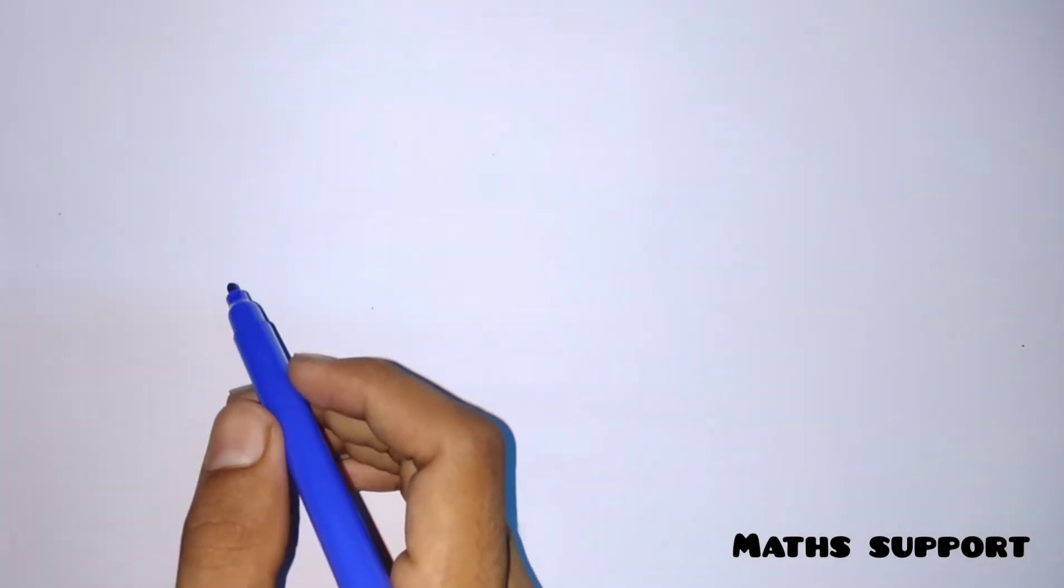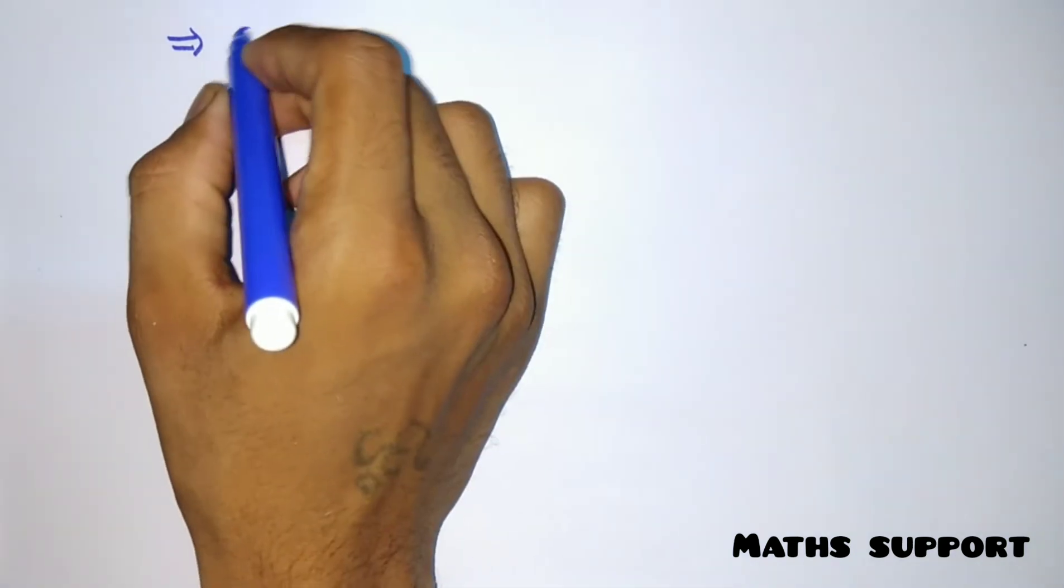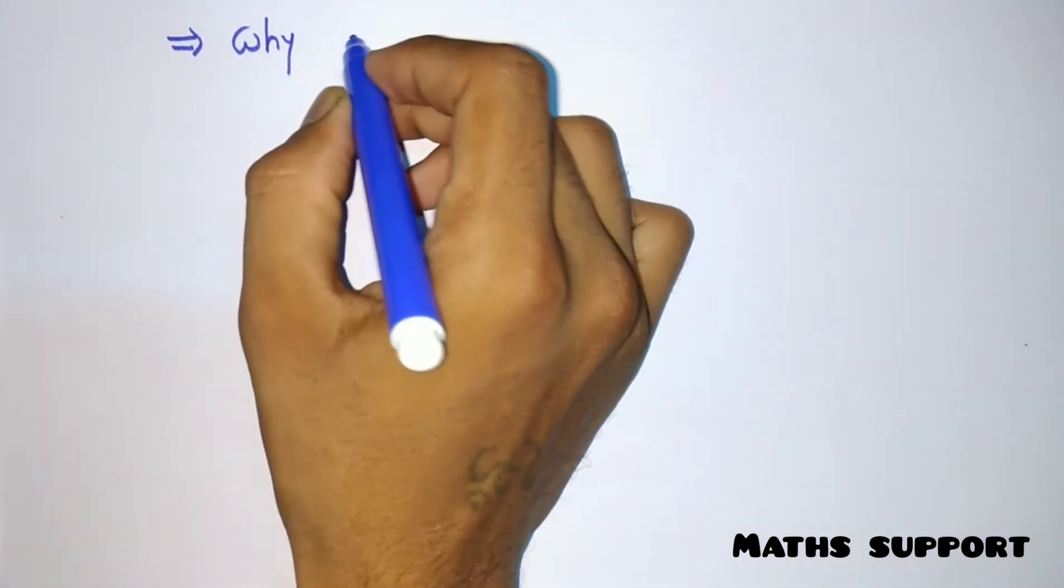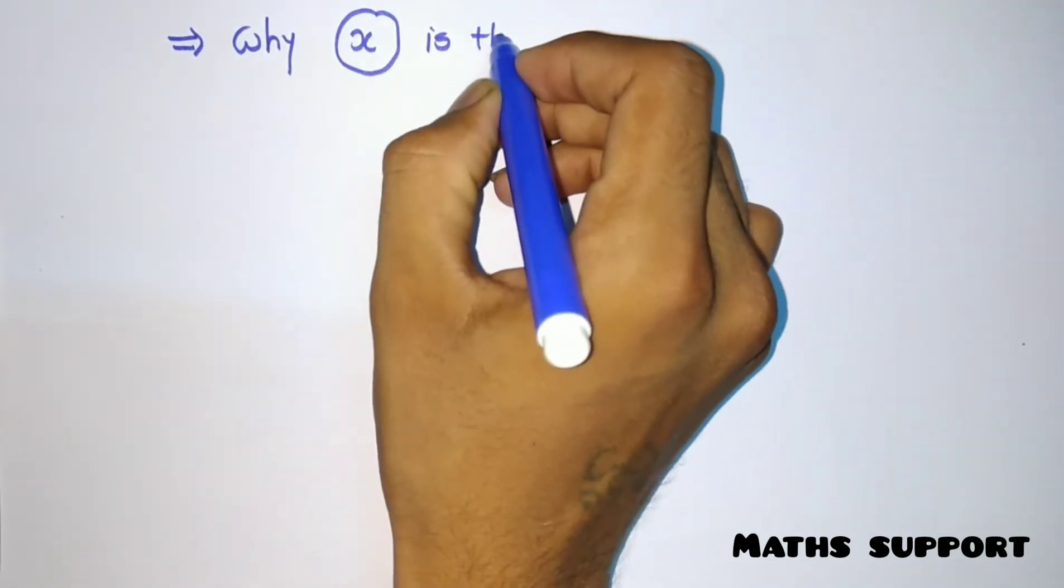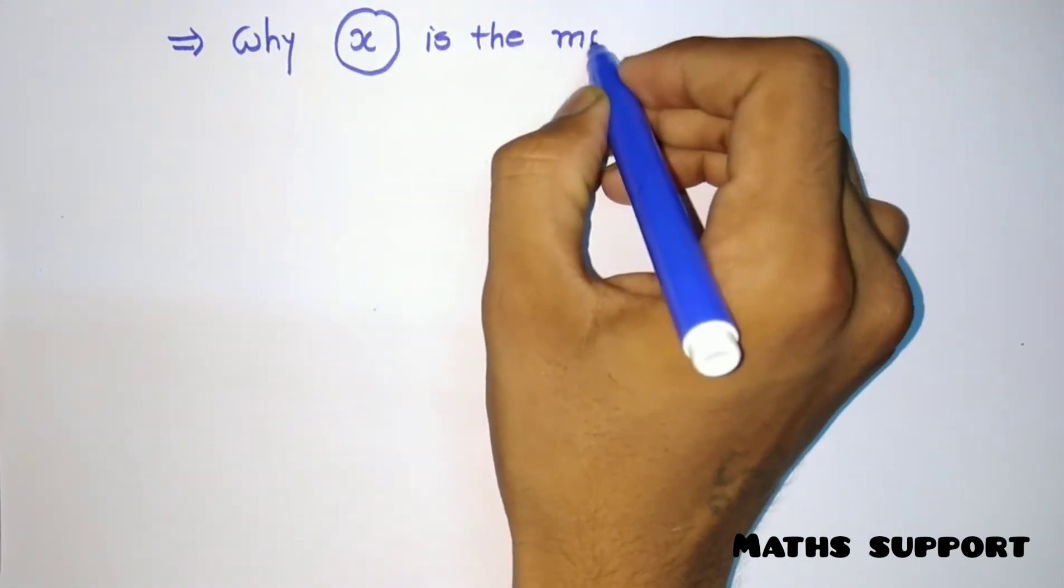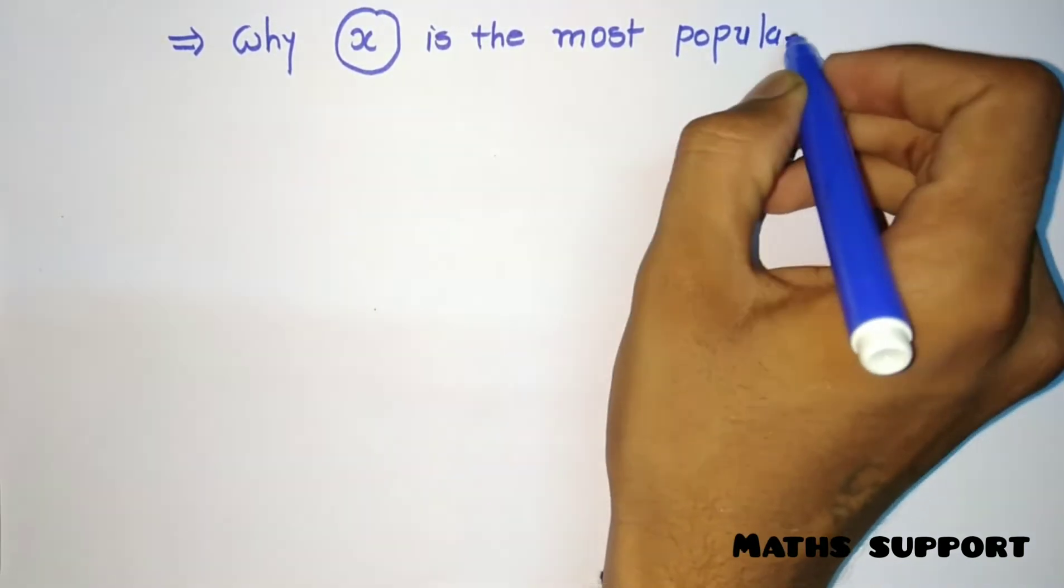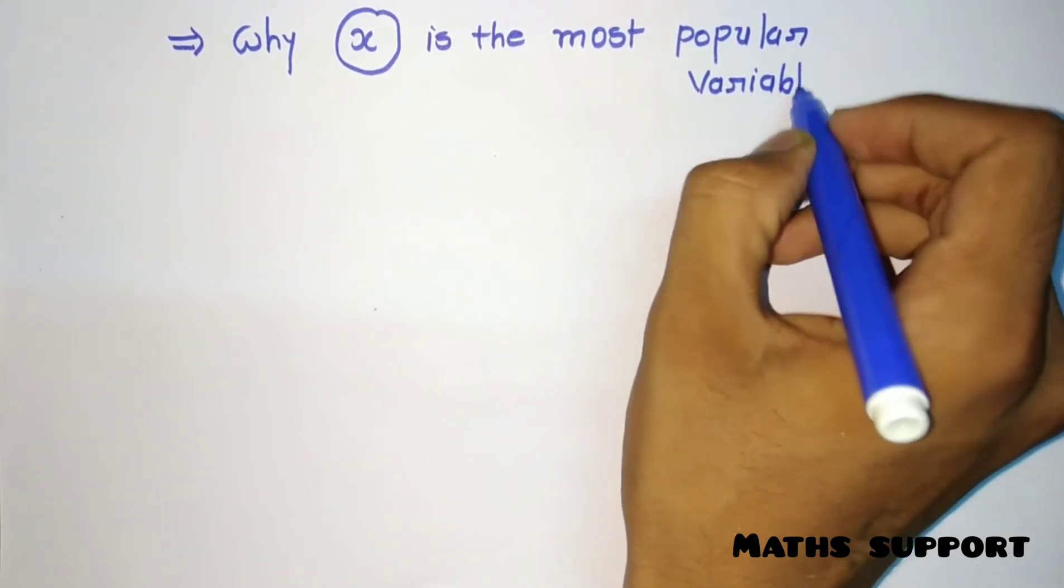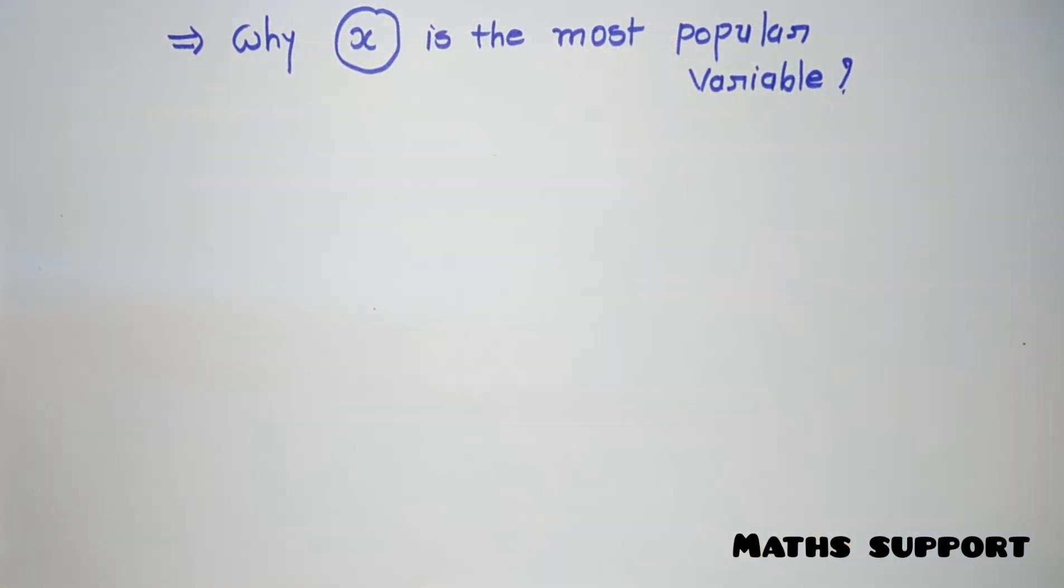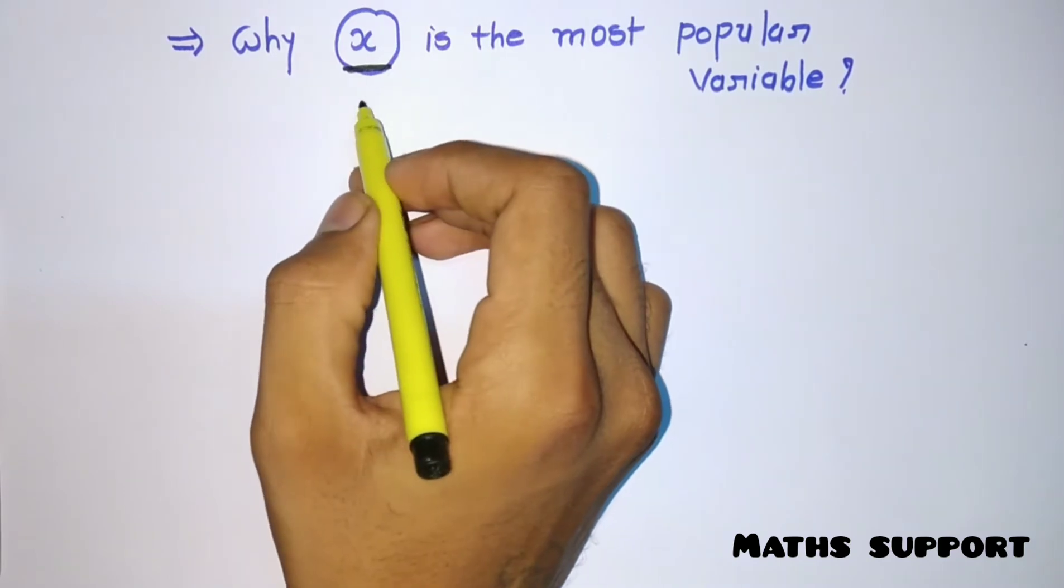Hello friends, welcome to Math Support. In this episode we're going to discuss why variable x is the most popular variable. For any kind of math questions, why are we using the X alphabet as a variable? There are lots of variables - A to Z, we have 26 alphabets.